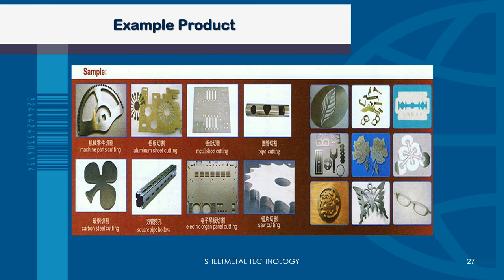Some example products cut using a laser cutter include machine parts, aluminum sheet cutting, metal sheet cutting, pipe cutting — for example hollow square pipes like those used in kitchen cabinet tracks — and razor blades. Complex design features can be achieved with laser cutting.